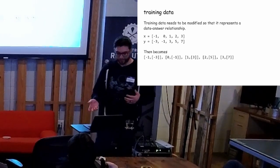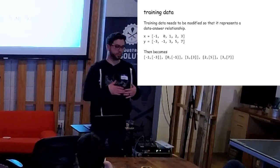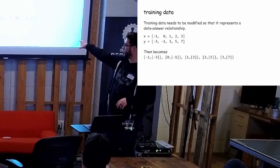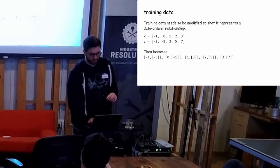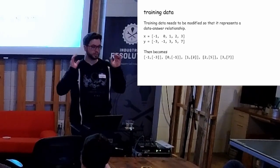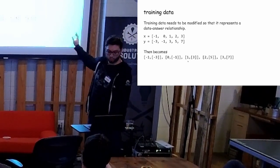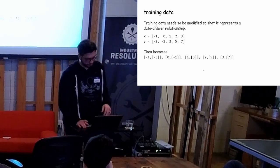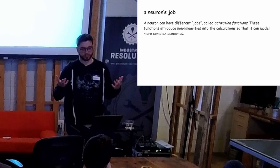So training data. Data needs to be modified so that it represents kind of a data-answer relationship. At the very beginning, we said machine learning, you give it data and answers and it spits out rules. So our two arrays then become this set of data underneath. And this is a notation of machine learning where this is kind of your data set and this last element is either sometimes called a label, sometimes an answer, but that's what you're expecting to get. So you feed it 1, you expect to get 3. You feed it 2, you expect it to get 5, etc.